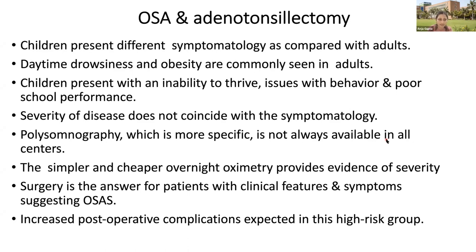OSA children may present differently compared to adults. Daytime drowsiness and obesity are common features in adults, whereas in children, inability to thrive, inability to gain appropriate weight, behavioral issues, and poor school performance are important aspects. Severity of disease does not always coincide with symptomatology. Polysomnography is a specific investigation but may not be available in many centers. A simple and easily available assessment is overnight oximetry, which can indicate severity. Surgery is indicated in children with clinical features and symptoms suggesting OSA, and we must expect high perioperative complications in this group.